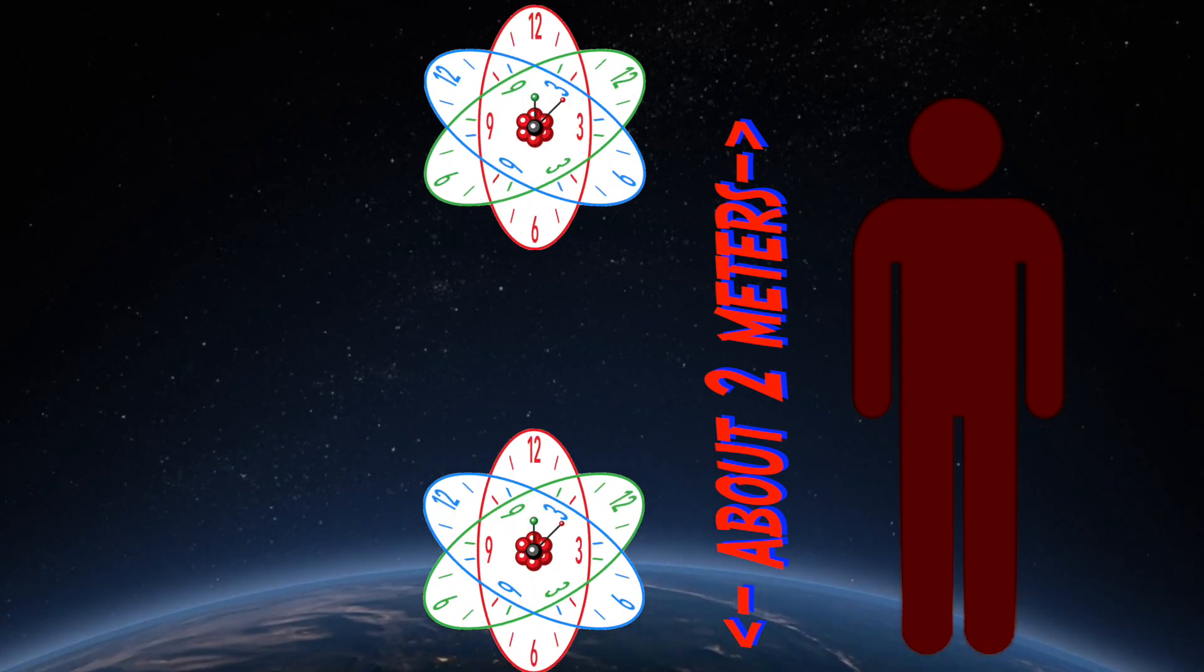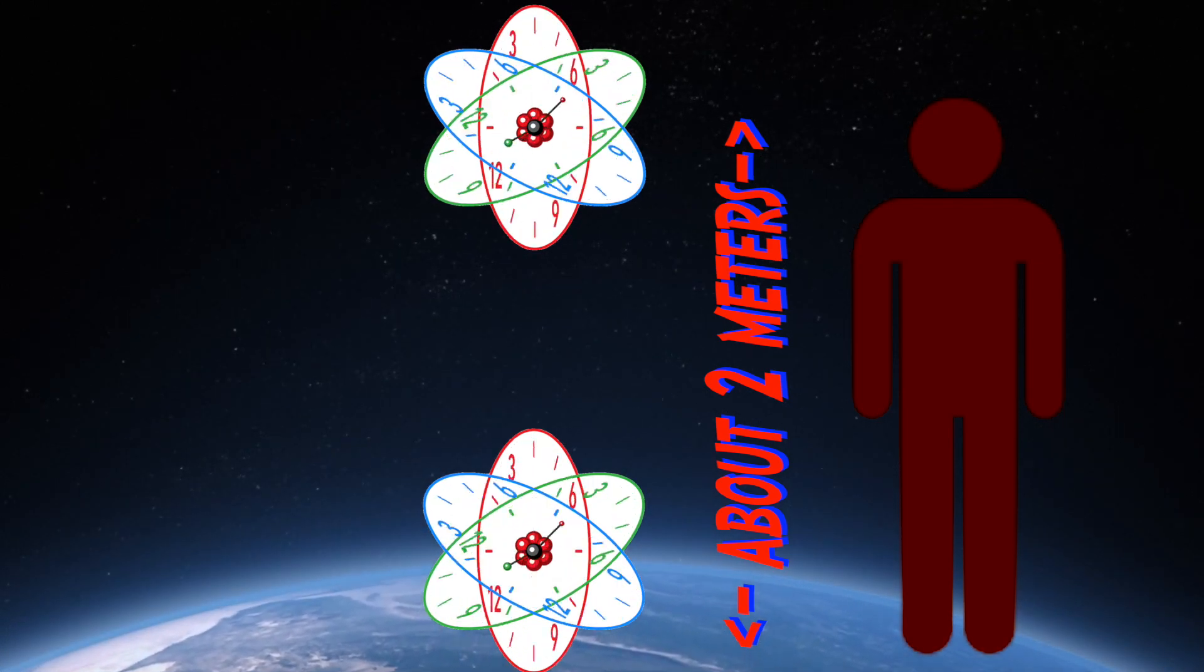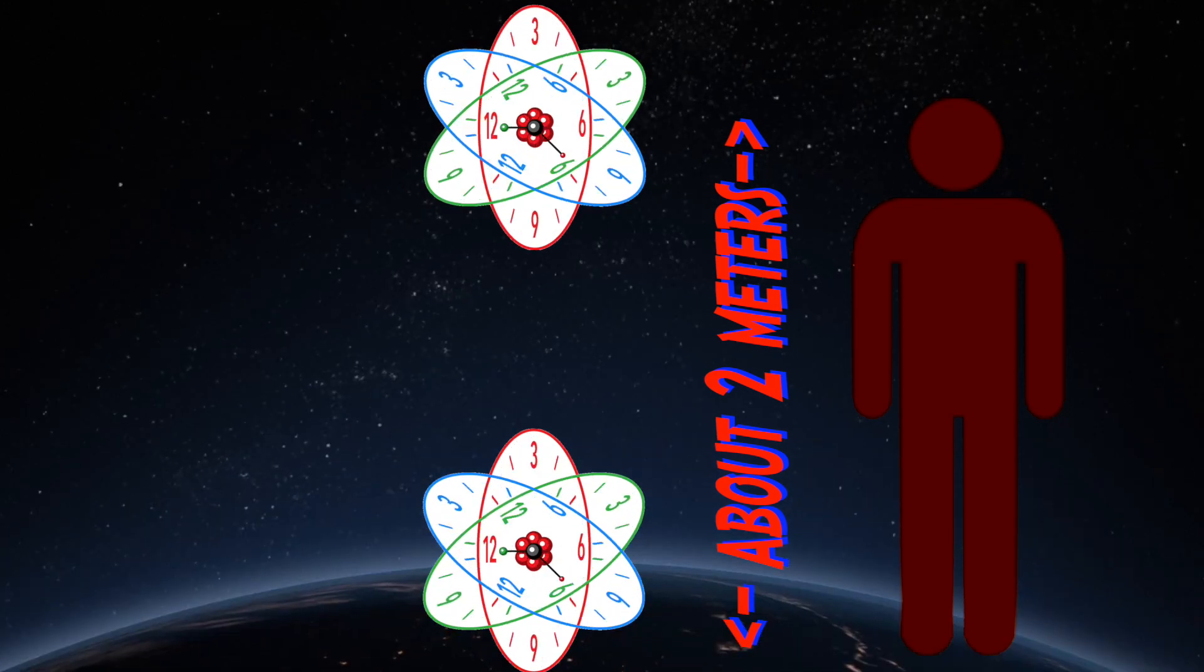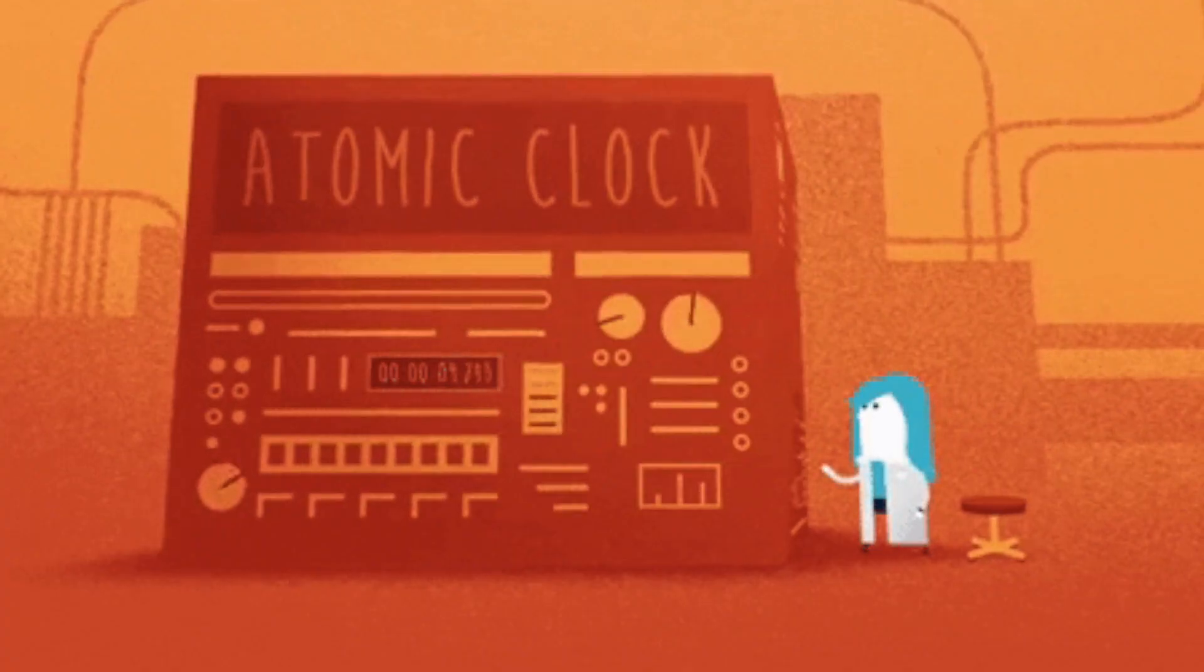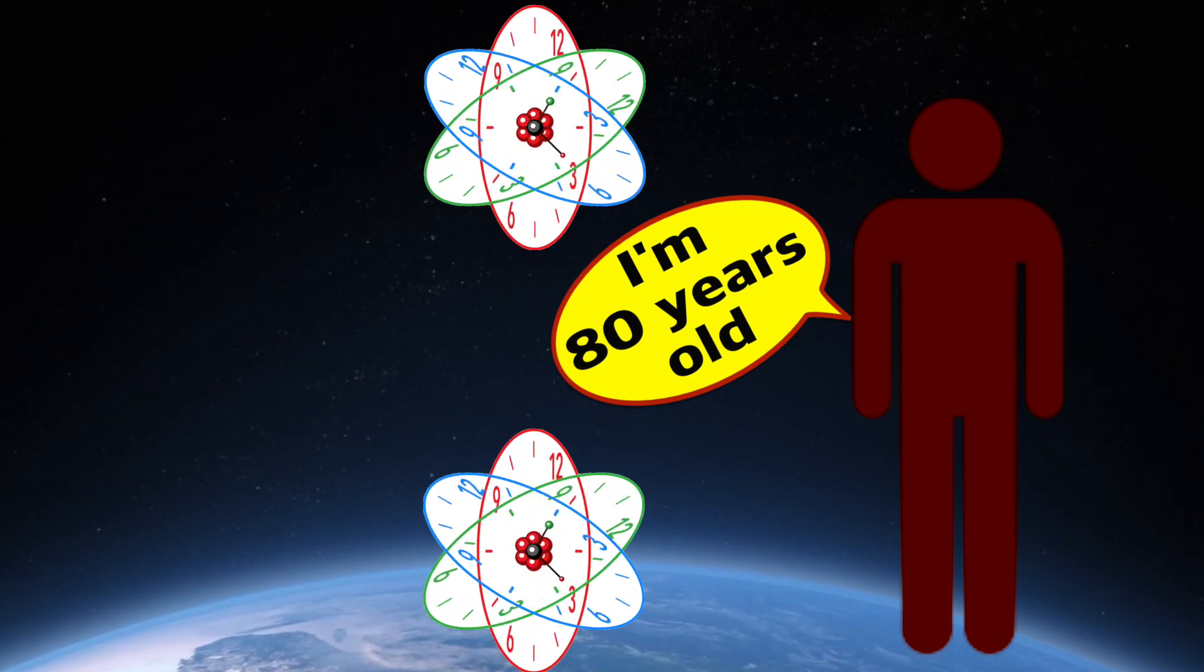So they put these two clocks, one at the ground level and the other one two meters above, and then they measured the time dilation, the difference of the ticking of clocks between these two distances. And then they did some computations and they established that by the time a person turns 80 years old...